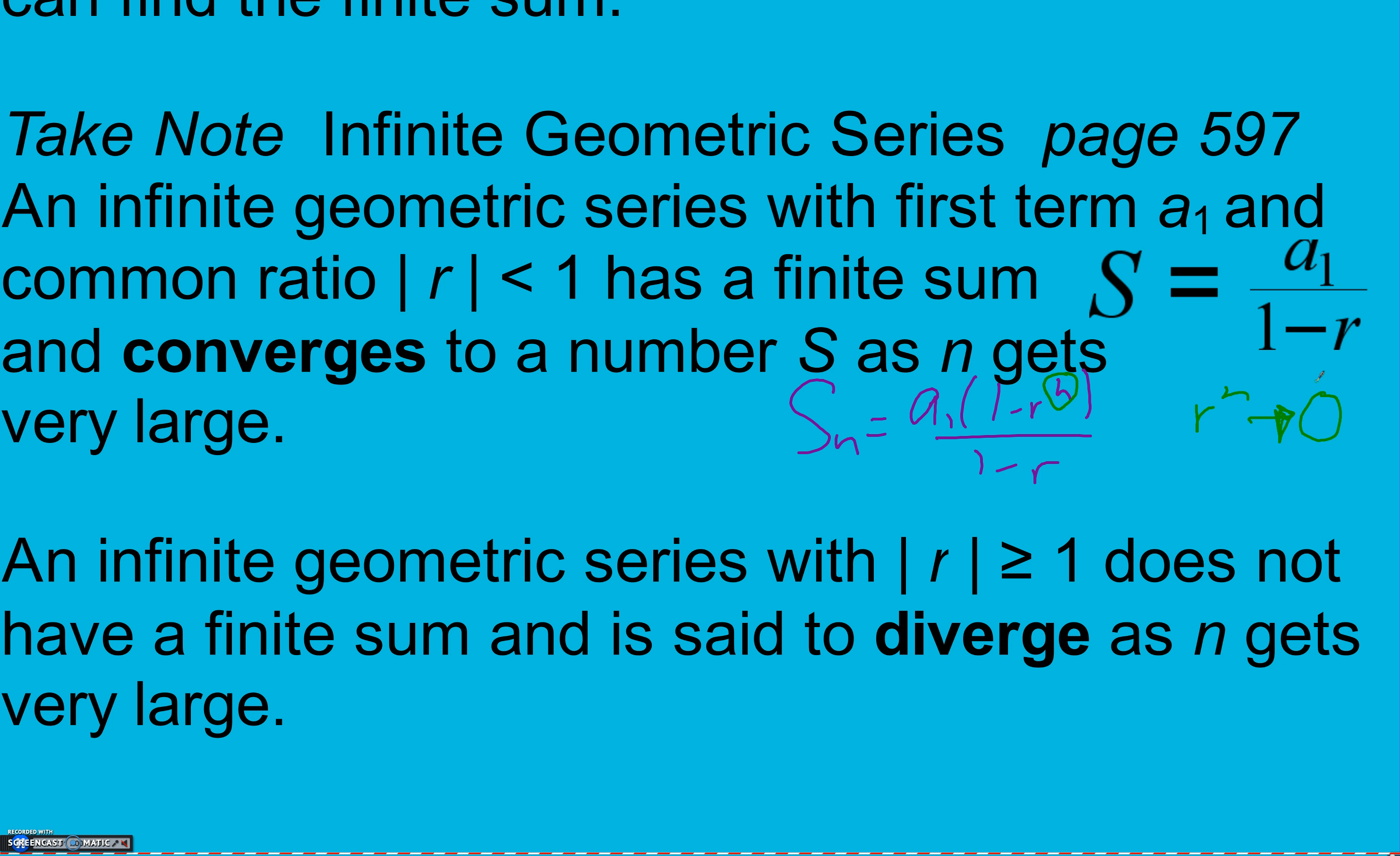But 1 minus that, eventually our calculators are just going to tell us it's 1 because it's too close to 1 to be able to round. And so 1 minus 0 is 1, and anything times 1 is itself. So we get a sub 1 over 1 minus r.